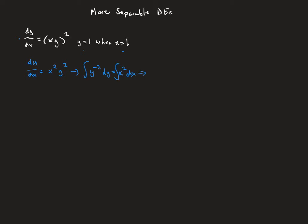On the left side, we're going to get negative y to the negative 1. Remember, we're going to put the plus c on the x side. When we integrate x², we're going to get one-third x³ plus c.